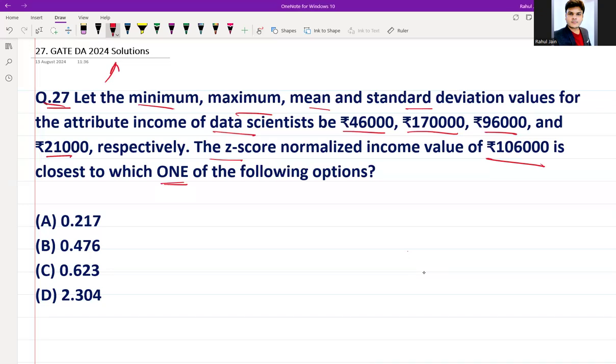We are given the mean value here, and the mean value is provided to us. Mean, maximum, minimum, and standard deviation respectively. So ₹96,000 is the mean value and we are having standard deviation as well, which is the last one, ₹21,000.